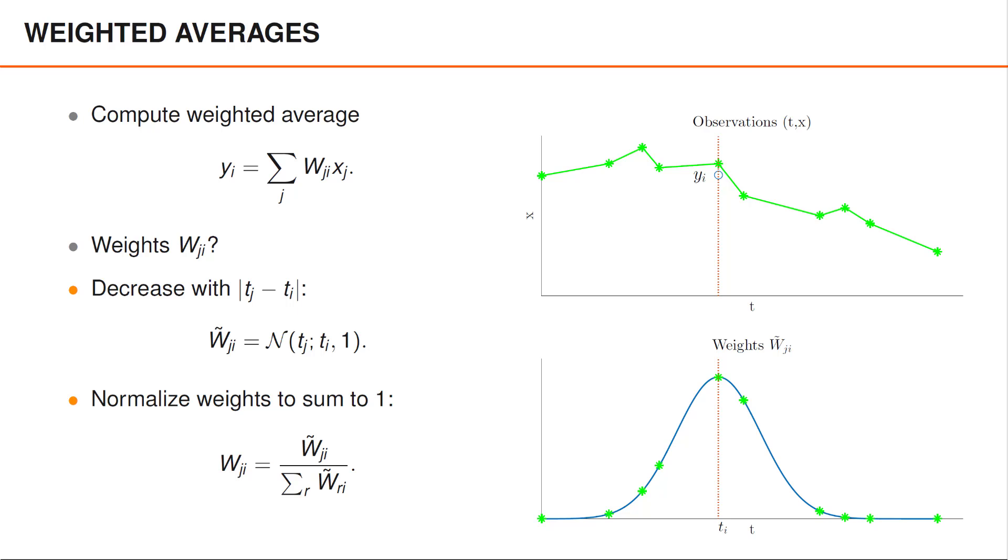We can now go through all the data points and do the same thing. Since the bell shape that determines the weights is always centered around the data point that we are looking at,